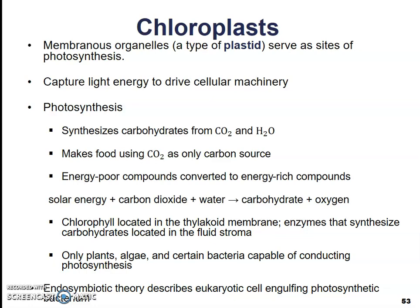So photosynthesis is the process where they make carbohydrates from carbon dioxide and water. They take in only carbon dioxide and water, use the carbon dioxide to make glucose. They take energy-poor compounds and convert them into energy-rich compounds. The equation is: solar energy plus carbon dioxide plus water yields carbohydrates and oxygen gas. That is the photosynthesis equation, which we're going to talk about in a lot more depth later on this year.